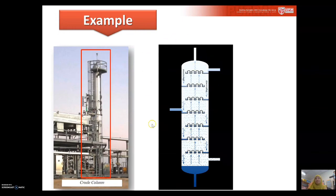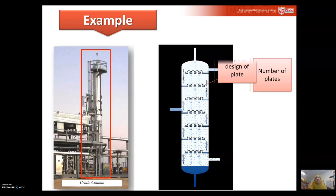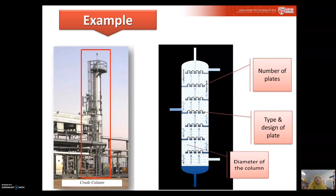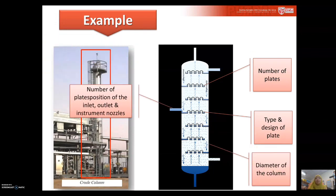For a distillation column, the specifications you need to calculate and identify include the number of plates, the type and design of plates, the diameter of the column, the number of plates, the position of the inlet, outlet, and instrument nozzles. These are among the things the process engineer will calculate and identify to find the best size and best type that suits the plant's needs.